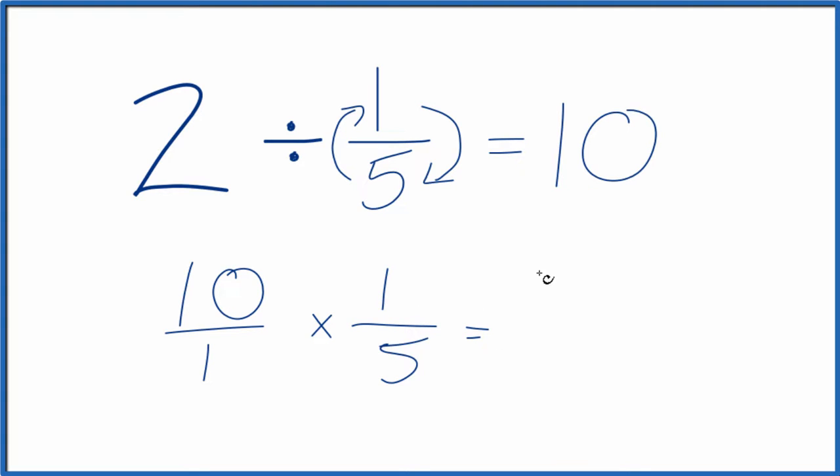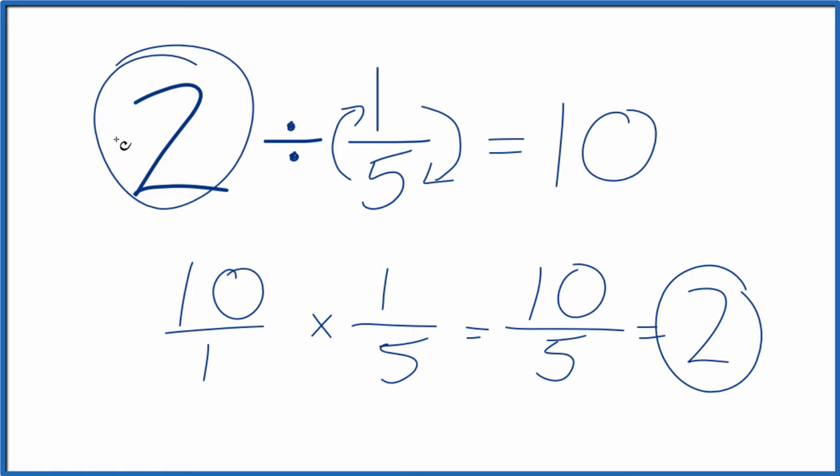And we get 10 times 1 is 10. 1 times 5 is 5. And 5 goes into 10 2 times. So we got what we started with here.